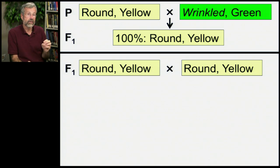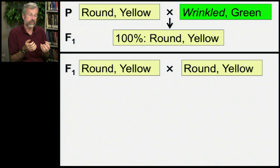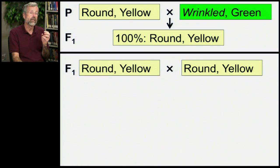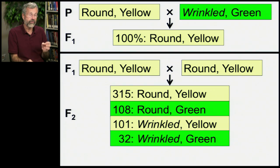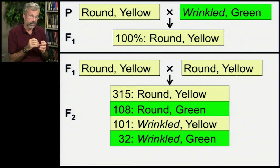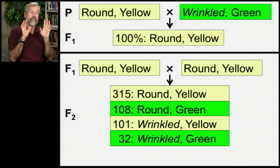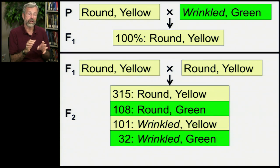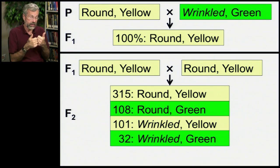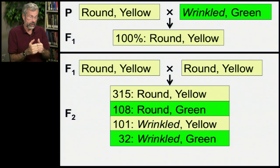So when we cross two individuals of this F1 generation — they're both round and yellow — what we find is the F2 generation has a very odd pattern. There are now four different phenotypes of the offspring when we're tracking the two traits simultaneously, and they're found in a characteristic ratio.